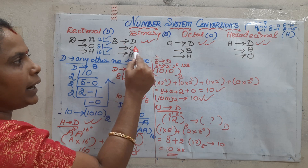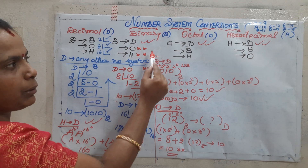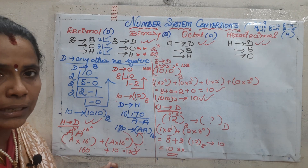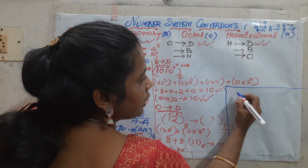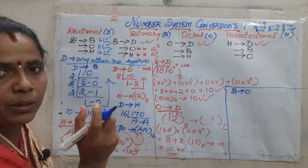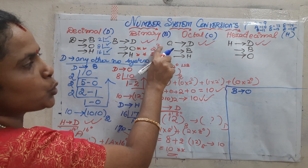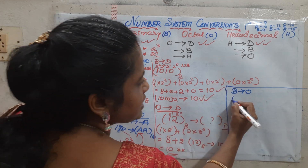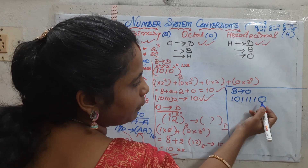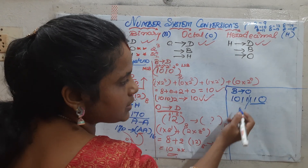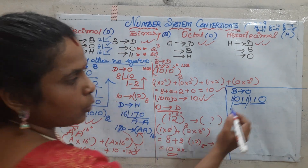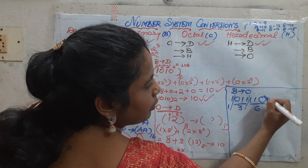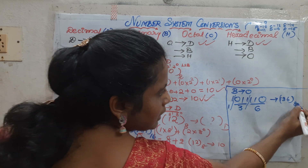We have finished 6 calculations. Now we move on to binary to octal and binary to hexadecimal. Octal is 2 power 3, and hexadecimal is 2 power 4. So to convert binary to octal, split the binary number into groups of 3 bits from the LSB. For hexa, group in terms of 4 bits from the LSB. Let us take a number — split into groups of 3. What is 110? It is 6. 011 is 3. So the value is 136 base 8.